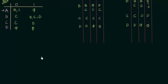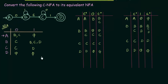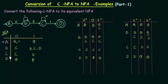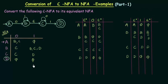Now let's draw the transition diagram. First, let's determine the final states. Any state that can reach the final state only by seeing Epsilon symbols can be a final state. A cannot reach D just by Epsilon. B via Epsilon can reach C, but not D. C also cannot reach D by Epsilon alone. So the only final state is D, which was already the final state in the original Epsilon NFA.